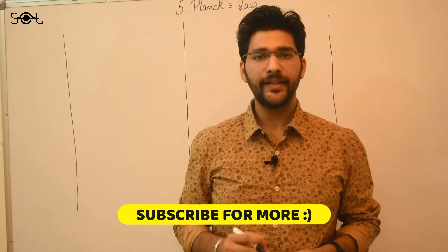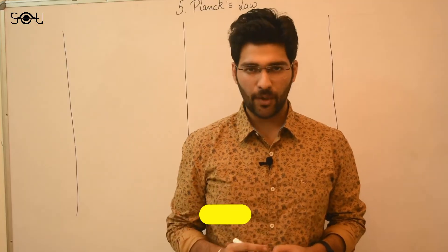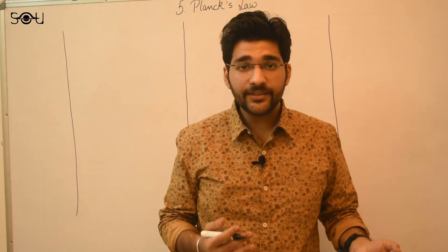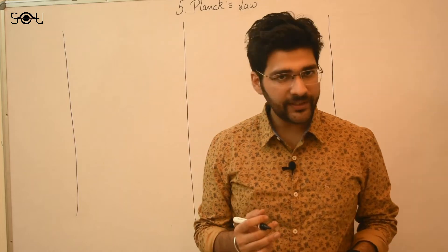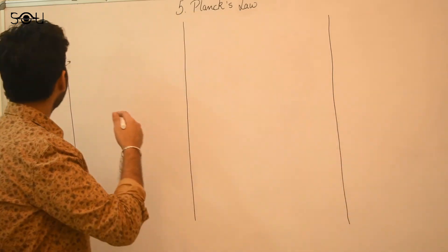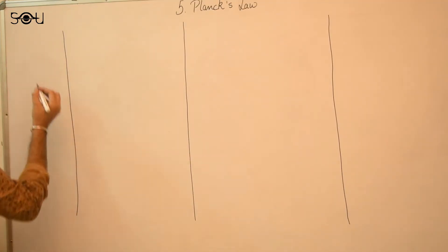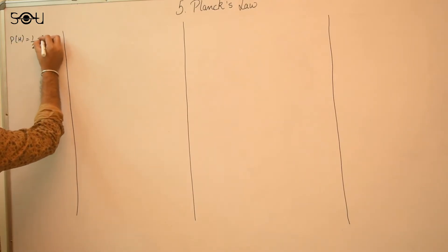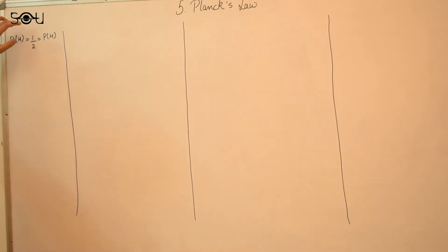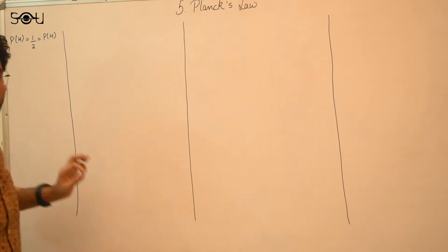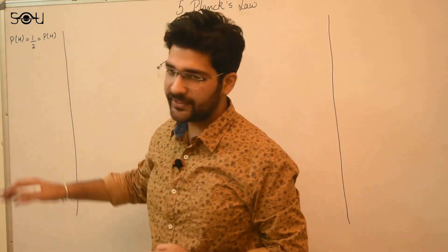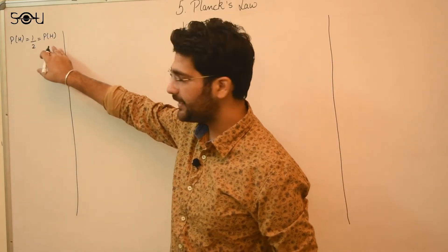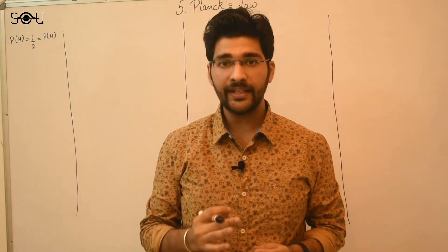Now let us derive Planck's law mathematically. Before we do that, let us go back to the basics of probability. Suppose I have a coin and I toss it — the possible outcomes are heads or tails. The probability of a particular event is calculated by dividing it by the number of total possible outcomes. So the probability of getting heads is 1/2. We divide by the total number of outcomes to ensure that the sum of all probabilities equals 1. This is a normalization procedure in mathematics.